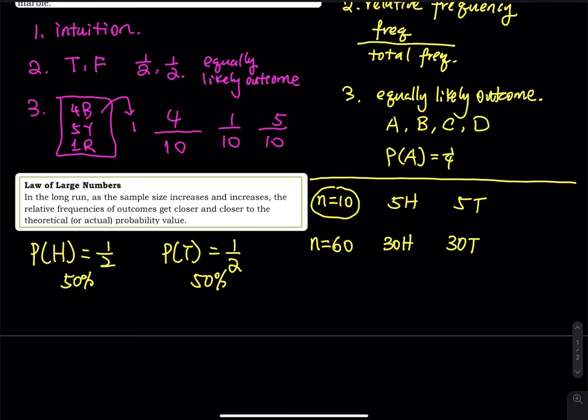Maybe you get 29 heads and 31 tails, or 32 heads and 28 tails. What I am trying to say is that out of 60 flips, the probability is very close to 50-50, as long as the number of trials is big enough. That is the law of large numbers.